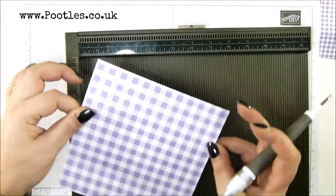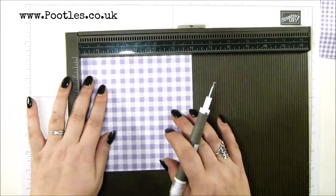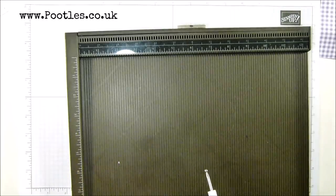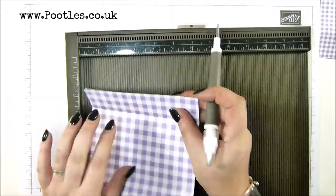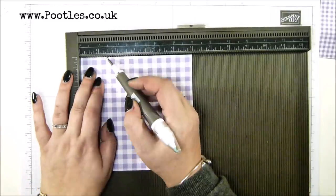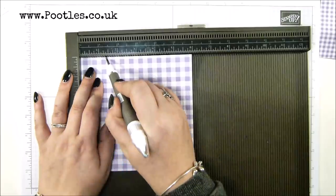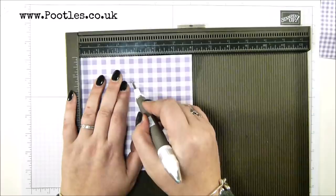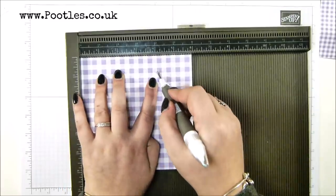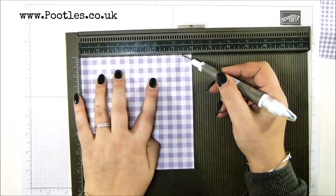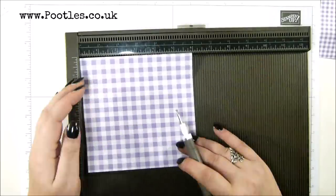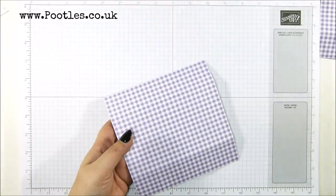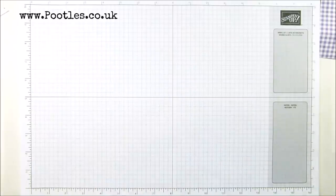And then turn the paper over. Don't rotate it, turn it over and repeat just to that score line. So just down to that score line again at one and three eighths, two and three quarters, four and an eighths. And obviously we don't need to do this one because it's already been done. So that's three and a half, seven and 10 and a half. I'm feeling like I need to put one in the middle. Have I not written down the one for the middle? I haven't.